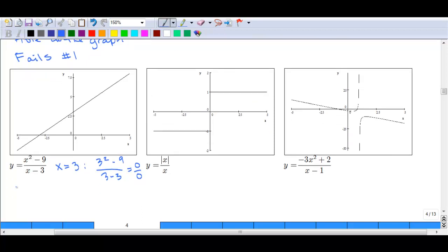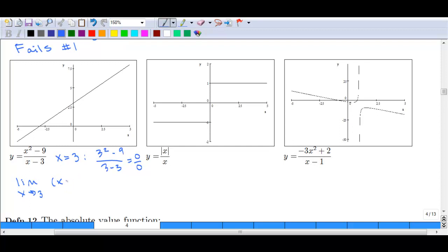However, if you take the limit as x approaches three, you can reduce this fraction, factor that x squared minus nine into x minus three, x plus three over x minus three. Reduce the x minus three divided by x minus three into x plus three. And when you plug three in, you get six.